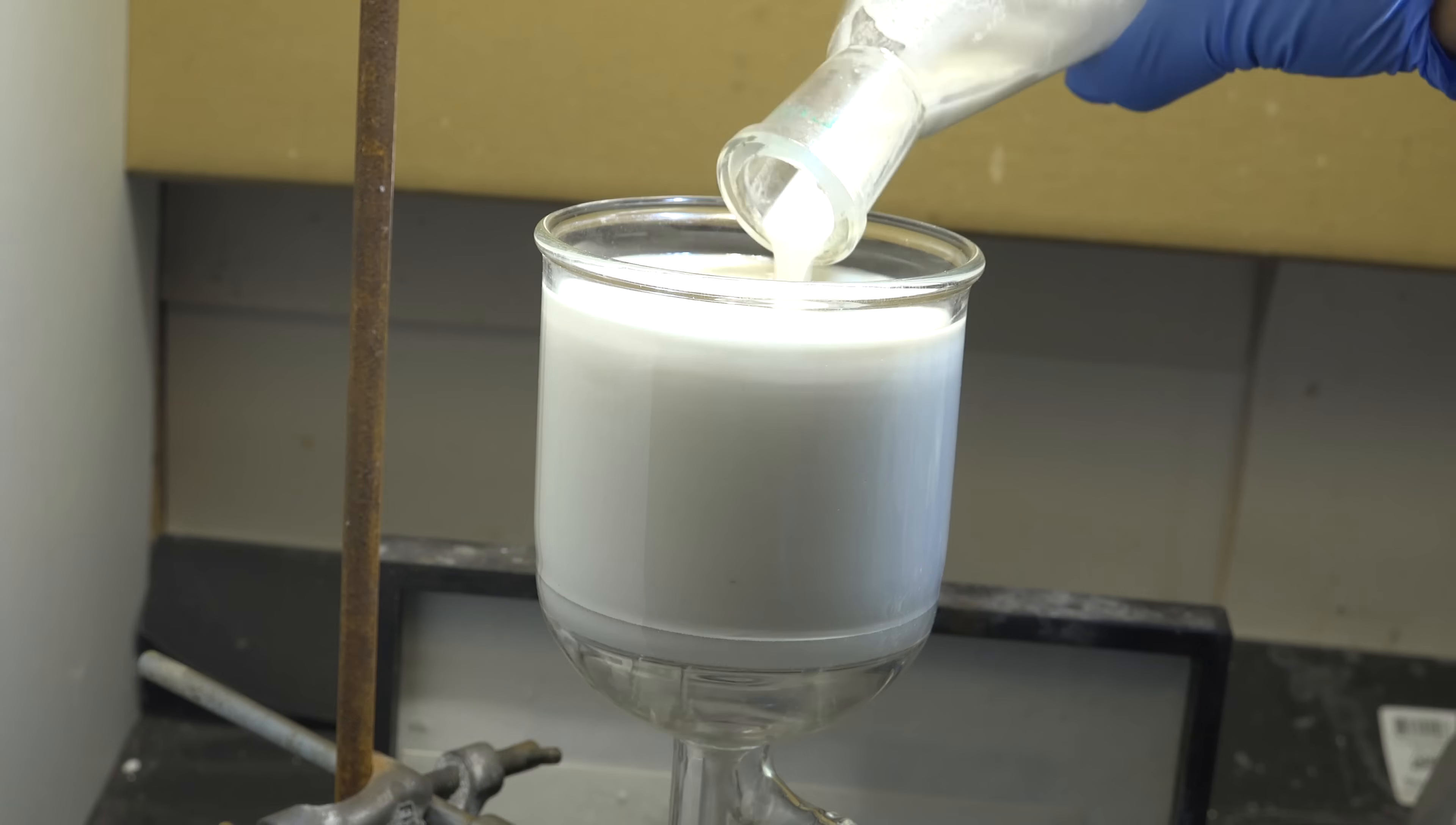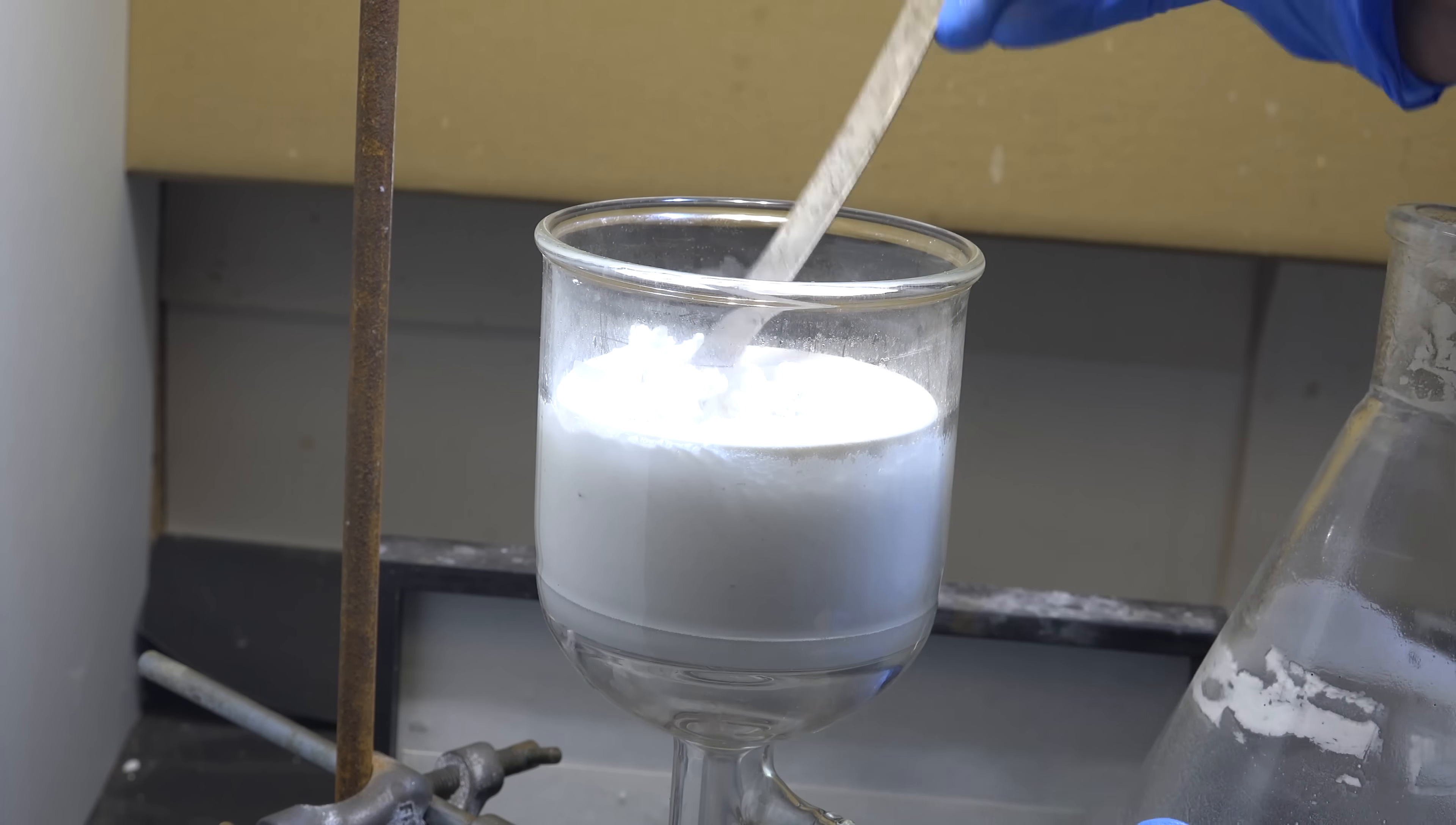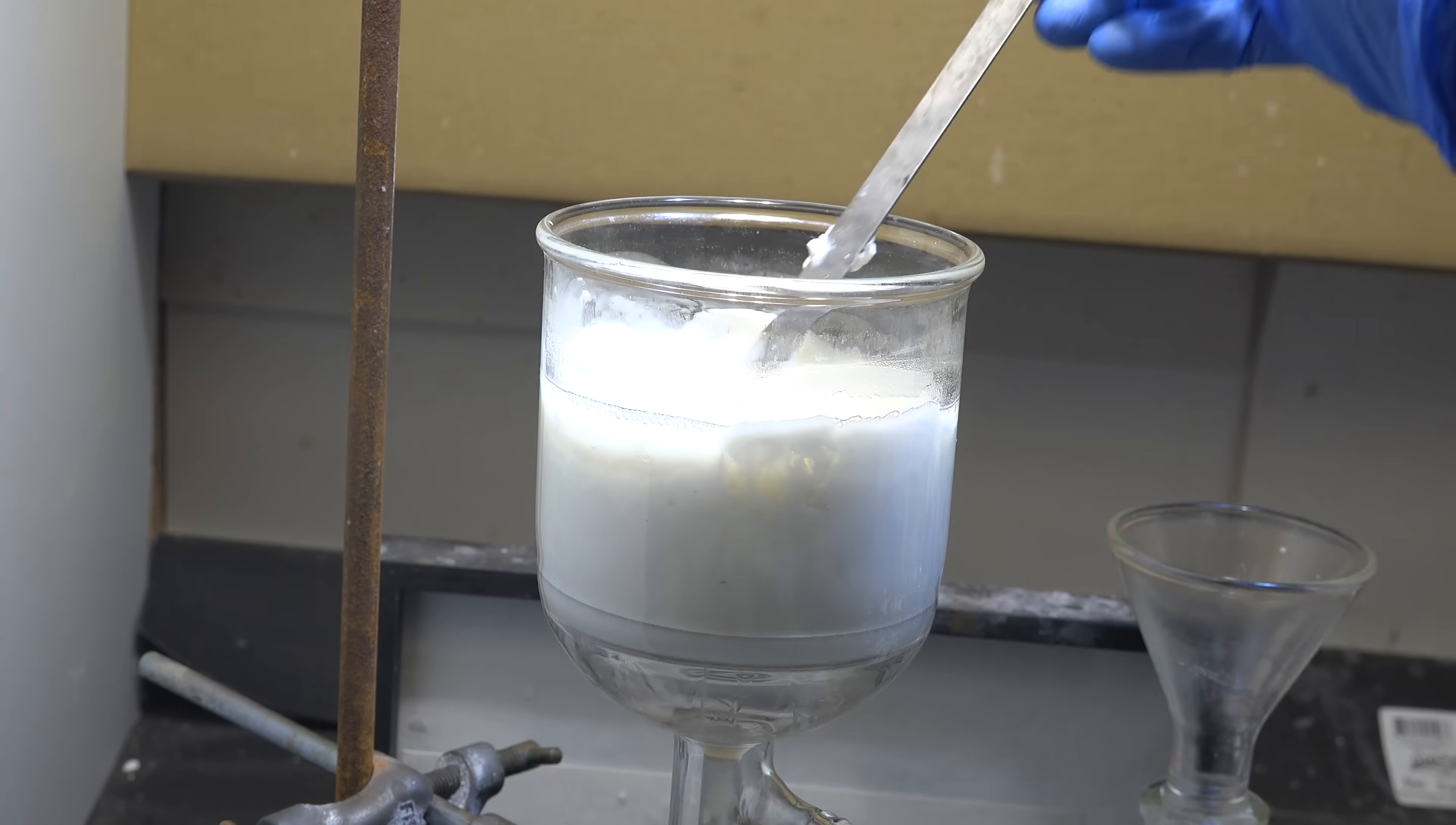Now set up a filter frit and vacuum filter our mixture. Using the purified water-free xylene we made earlier, wash out our reaction flask and stir up our salt residue to try and wash out as much of our remaining products as we can.